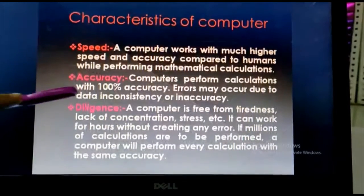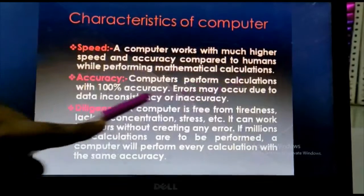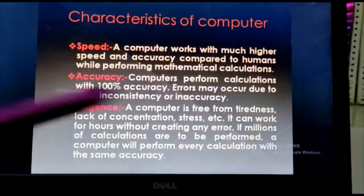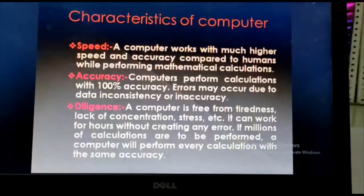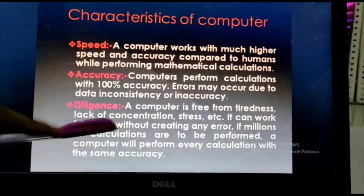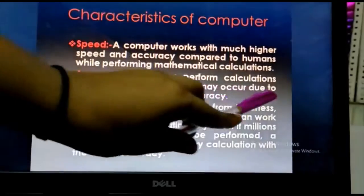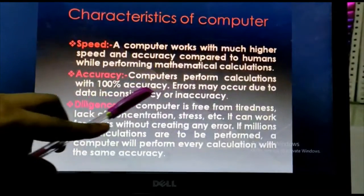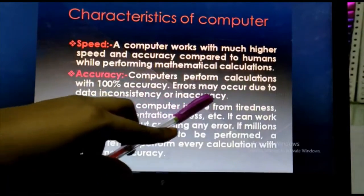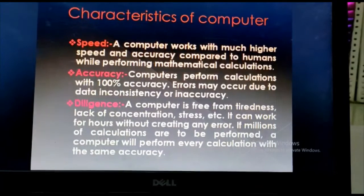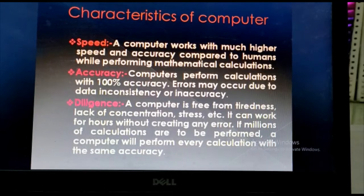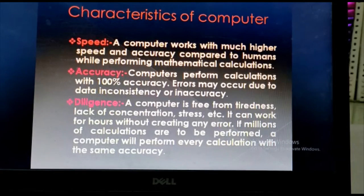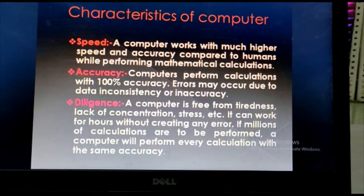Second is accuracy. Computers perform calculations with 100% accuracy. Means computer gives us accurate results or calculations. Error may occur due to data inconsistency or inaccuracy, which means that error in computer can happen only due to human beings.